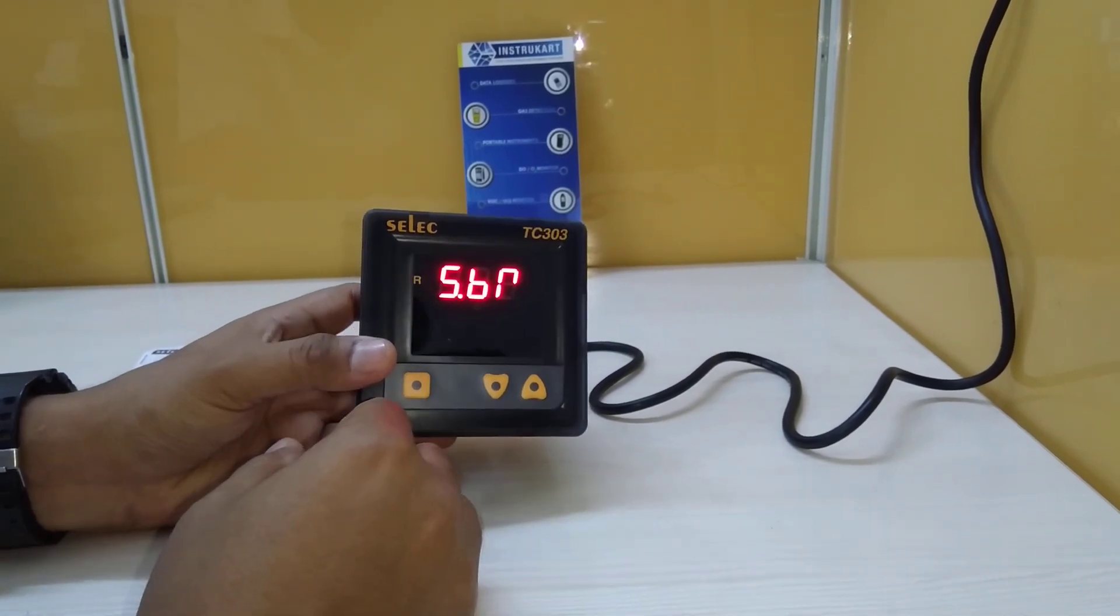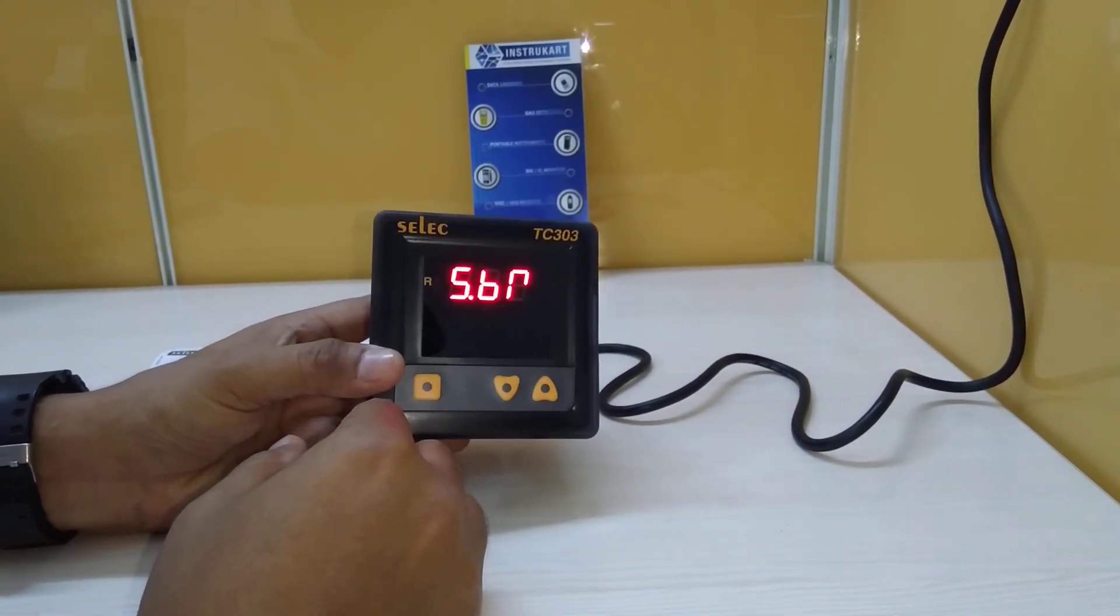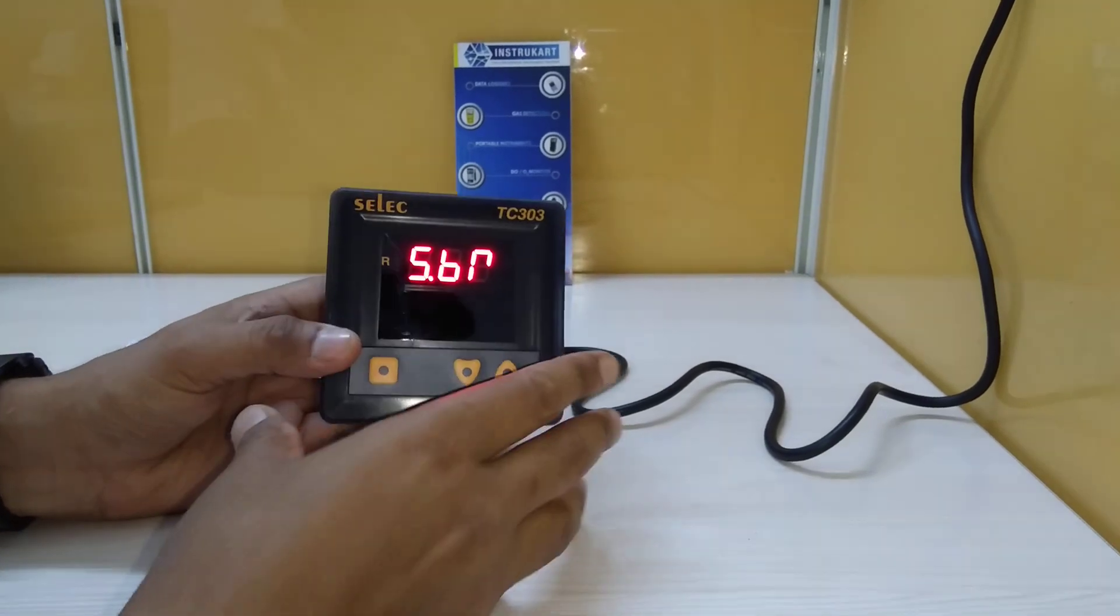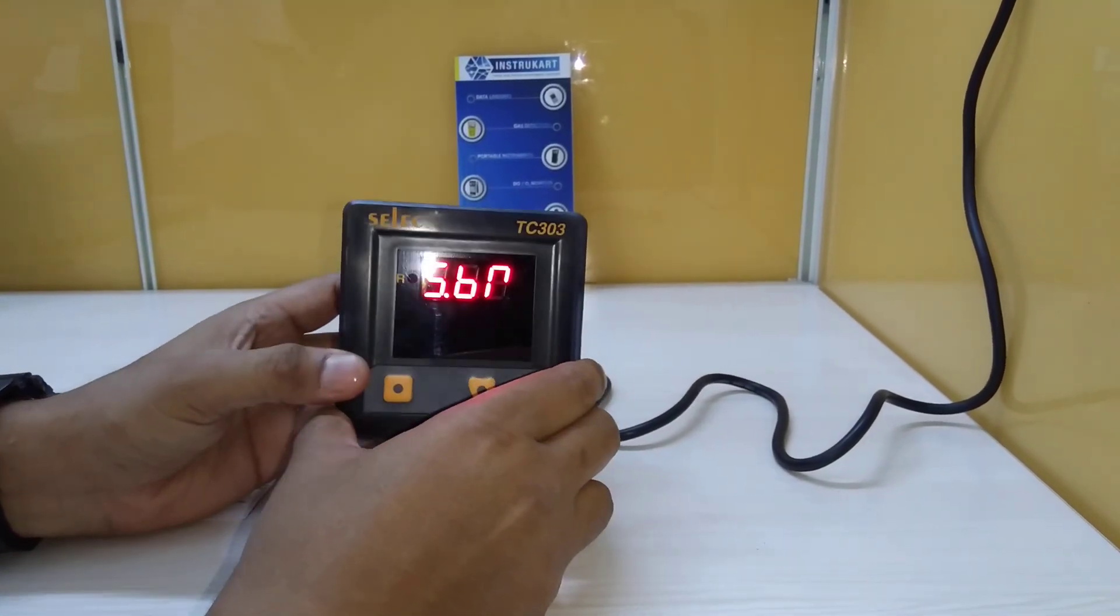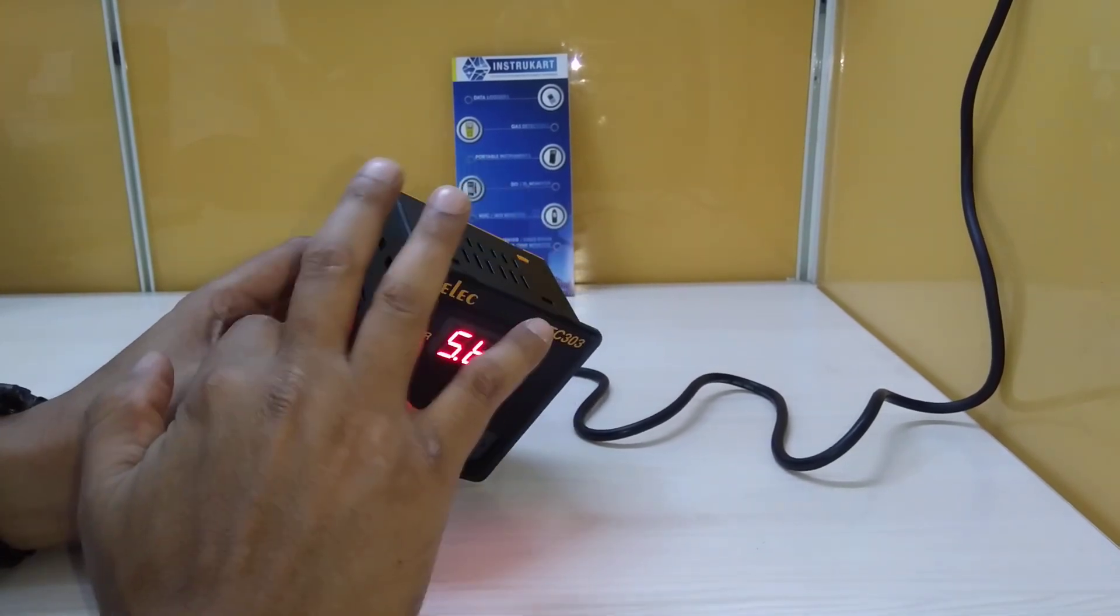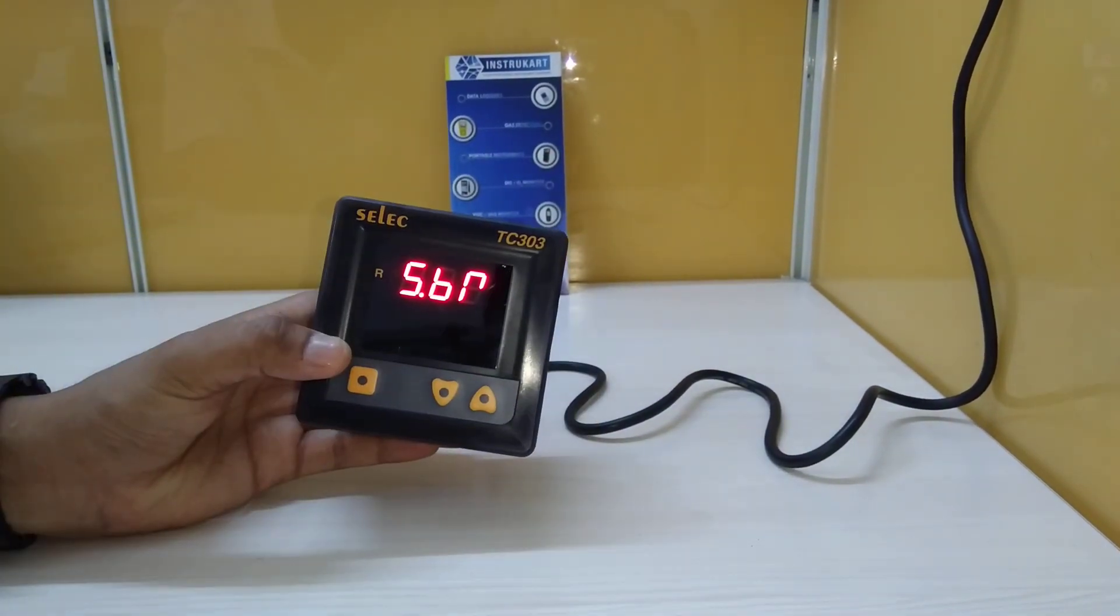It has an indication option with a seven-segment, three-digit display. This has a 96 by 96 dimension that can be correctly fitted to the panel.